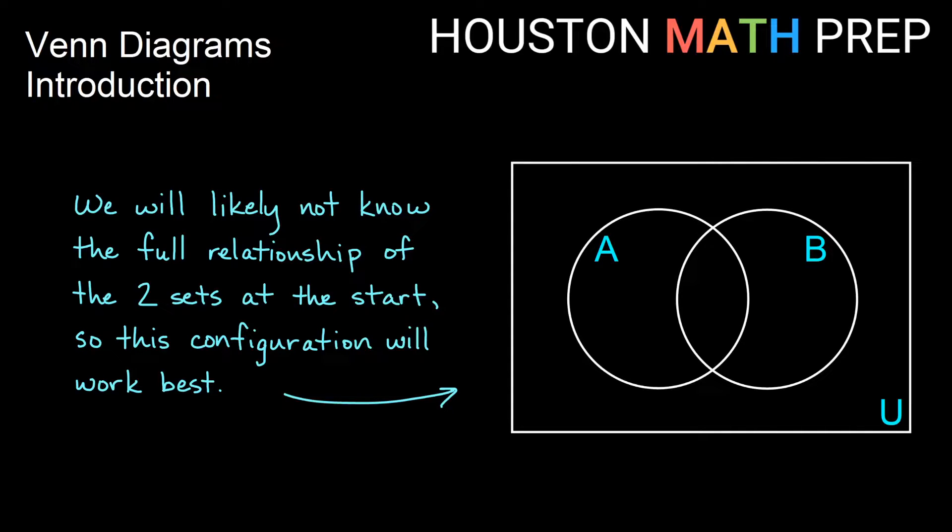The problem is when we start sketching some sort of a Venn Diagram with sets A and B, it's very likely that we won't know the full relationship of sets A and B. Do they overlap? Is one contained completely in the other? So this configuration where they overlap a little bit is actually going to work best for us. And if they don't actually share anything in common, then we'll be able to see that in the way that we label the different regions here.